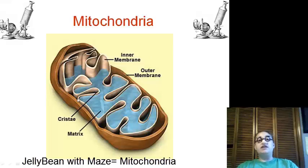Again, it is a jelly bean that has a maze inside of it. And each of the folds in the inner membrane is known as the cristae. And the fluid inside of that inner membrane is known as the matrix. And we go back and forth, in and out of that inner membrane, so that we can create energy.